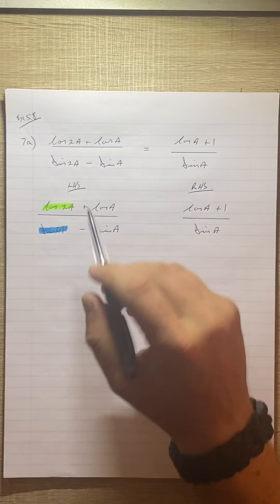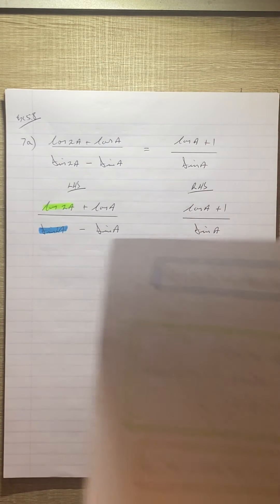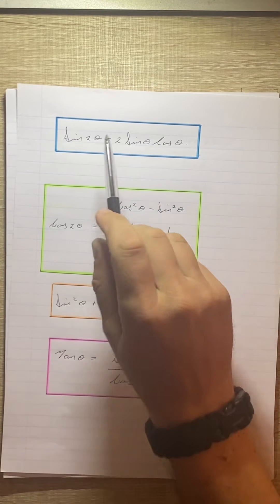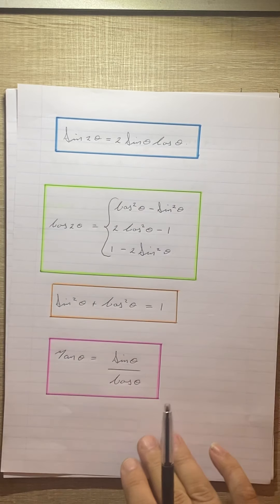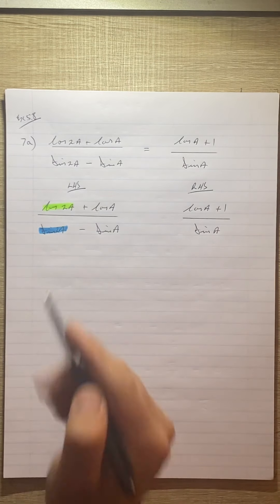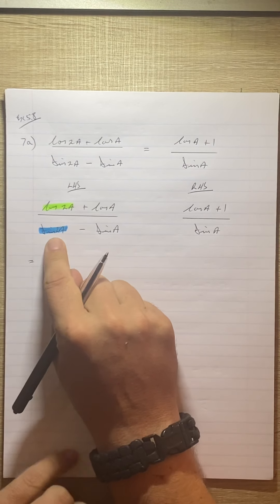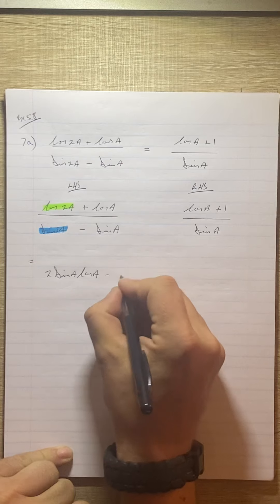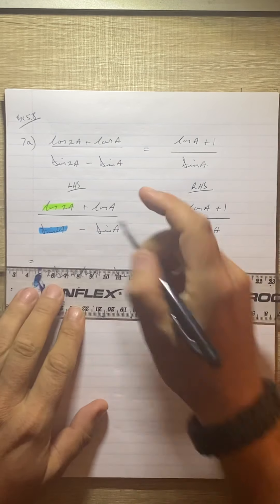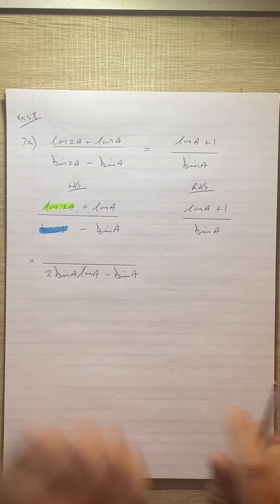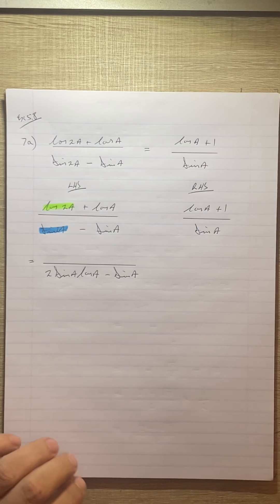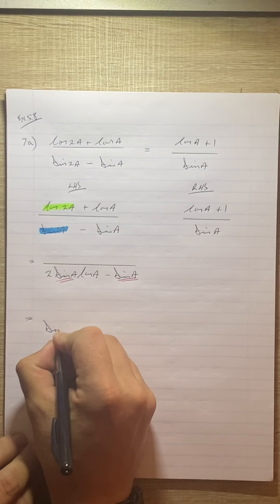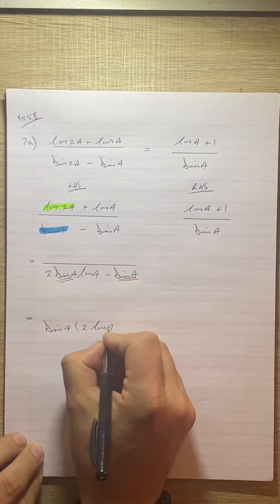The problem with cos 2a is it can be one of three things. But the sin double angle can only be one thing, so always start with that one. I'm going to leave the numerator for now and just expand the denominator. So we get 2 sin a cos a minus sin a.